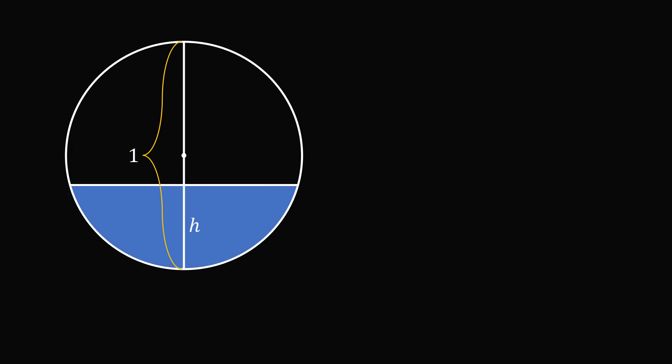We start by constructing the center of the circle and constructing radii to the endpoints of the chord of the circular segment. The diameter of the circle is equal to 1, so each radii will be half of that. So each radius length will be equal to 0.5. We then need to calculate this central angle. Let's label this as equal to theta.